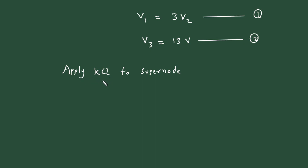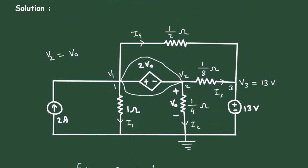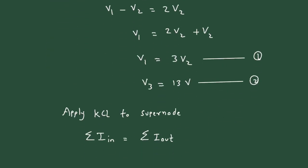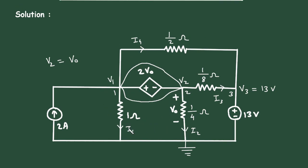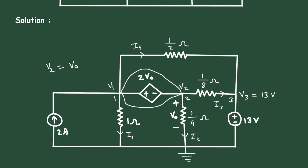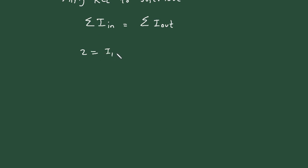KCL stands for Kirchhoff's current law. According to KCL, the summation of all current entering a node equals the summation of all current leaving the node — that is, sum of I-in equals sum of I-out. At this supernode, the entering current is 2A. All other currents I1, I2, I3, and I4 are leaving, so: 2 equals I1 plus I2 plus I3 plus I4.